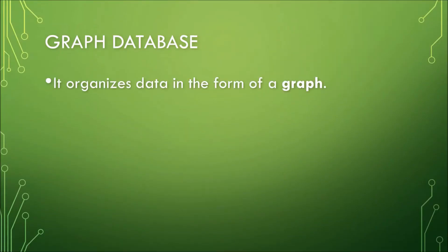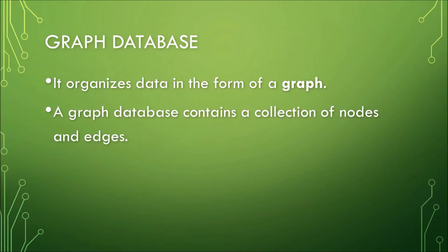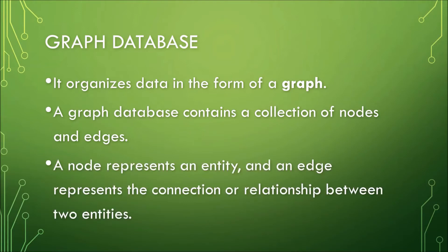A graph database organizes data in the form of a graph — specifically, it represents a mathematical graph. A graph database will typically be a directed graph, where edges always have a direction associated with them. A graph database contains a collection of nodes and edges, where a node represents an entity and an edge represents the connection or relationship between two entities. This means a graph database stores entities as well as the relationships among those entities, where every node and edge has a unique identifier.